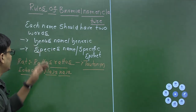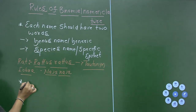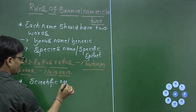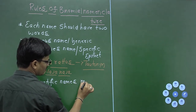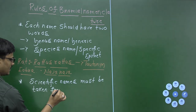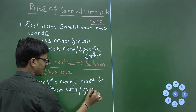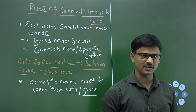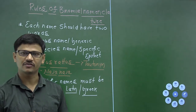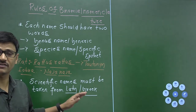The second rule of binomial nomenclature: scientific names of organisms must be taken from Latin language. Sometimes Greek language may also be used. Whenever a name is given to any organism, it should be taken from either Latin or Greek. No English, Hindi, Kannada, Telugu, or other languages are preferred — only these two languages are used, and most of the time we use Latin.